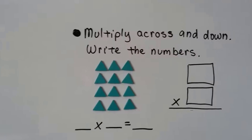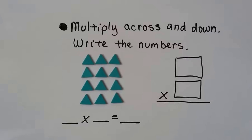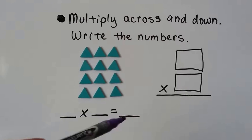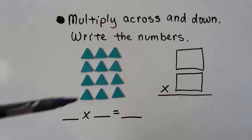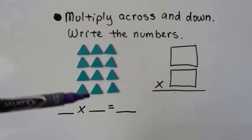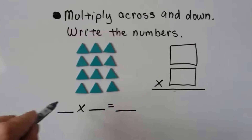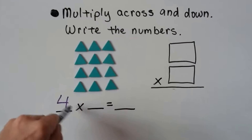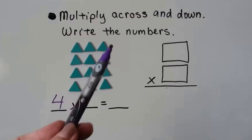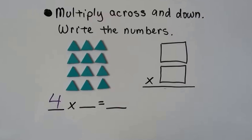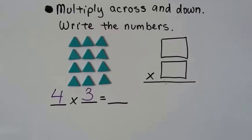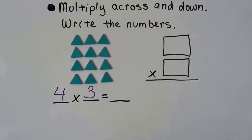So we can multiply across and down. If we write a number sentence, how many groups do we see? That would be the first number — we see four groups. And how many are in each group? Three. And they are equal groups. So how many are there in all?